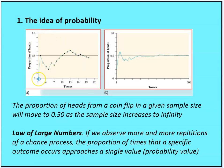For the first trial, one was flipped and it was a tail. Two flipped and one was heads and one was tails. Three flipped, it looks like one was heads and two were tails. Four flipped, it looks like one was heads and three were tails, and so on. As the number of tosses moves towards infinity, the proportion of heads moves to 0.5, because there is half a chance that in any toss the coin will come up heads or tails. So 0.50 is the frequency of occurrence in an infinite or very large sample.